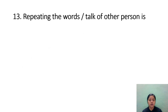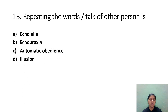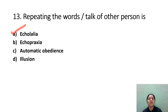Repeating the words or talk of another person is: Option A: Echolalia. Option B: Echopraxia. Option C: Automatic Obedience. Option D: Illusion. The correct answer is Option A, Echolalia. Echolalia is when the patient repeats, or echoes, what is said to them. Echopraxia is the imitation of movements.